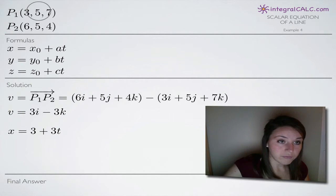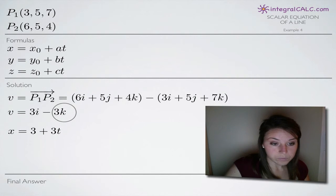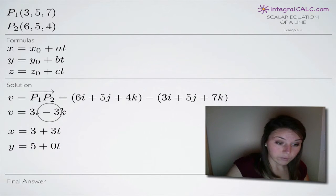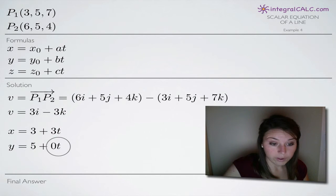For y, we'll plug in 5 for y₀, and for b, we would plug in the coefficient on j. In this case, our vector indicates that j has completely dropped off, so the coefficient on j is zero. So for y, we'll end up with 5 + 0t because this zero gets plugged in here for b. We don't have j in our vector equation.